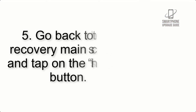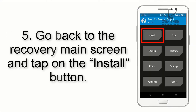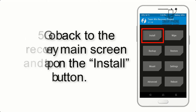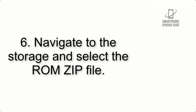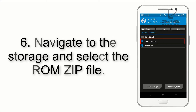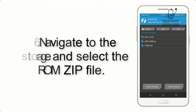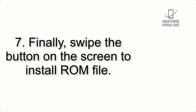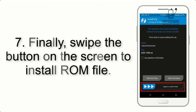Step 4: Swipe the button to wipe the device. Step 5: Go back to the recovery main screen and tap on the Install button. Step 6: Navigate to the storage and select the ROM zip file.